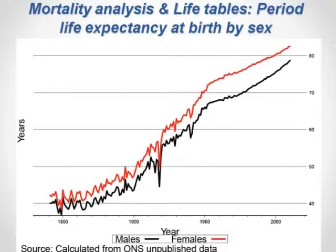Starting with life tables — Graunt's main contribution — as a species we really can't live much below a life expectancy of 20 years. Not enough women survive through to have enough children for at least one daughter to survive themselves, so our floor is at least 20 years life expectancy.